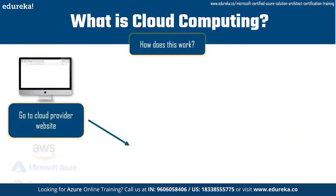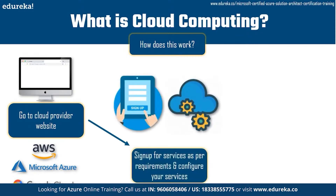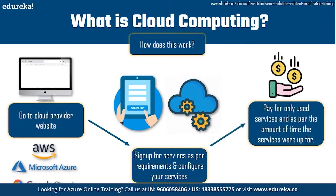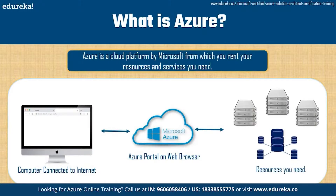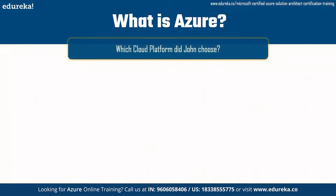How does this work? John goes to the cloud provider of his choice — Amazon Web Services, Microsoft Azure, or Google Cloud, which are the top cloud providers. He signs up for an account, signs up for services as per his requirements, and configures the resources he needs. The amazing thing is that he only pays for the services he uses and for the amount of time those services were running. So let's now talk about what is Azure. Azure is a cloud platform provided by Microsoft from which you can rent resources and services via the Azure portal.